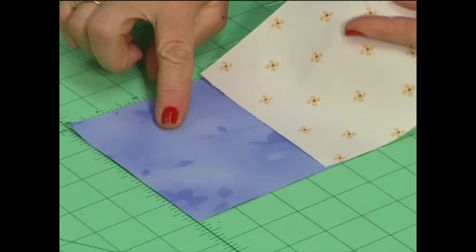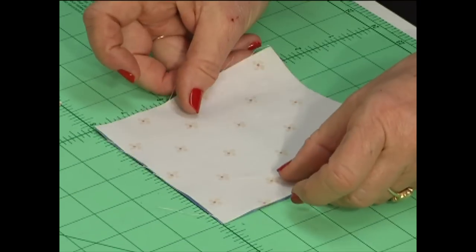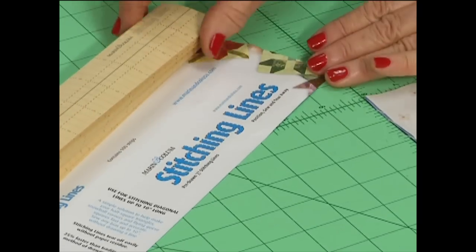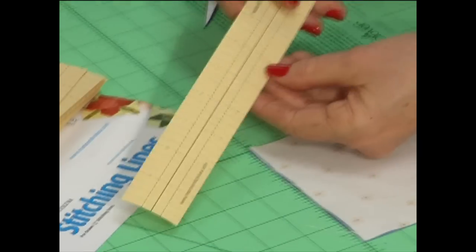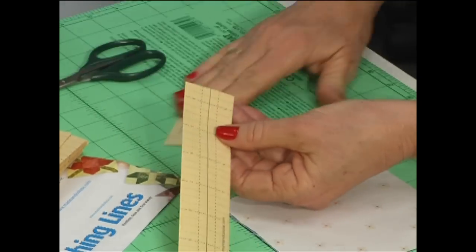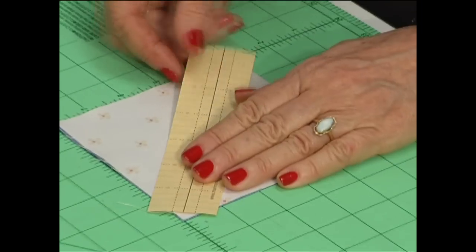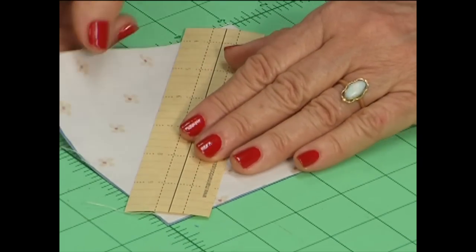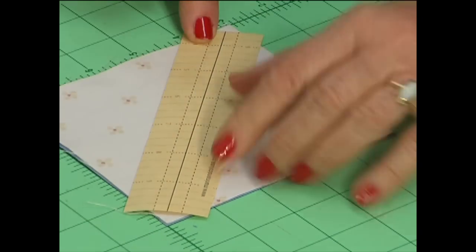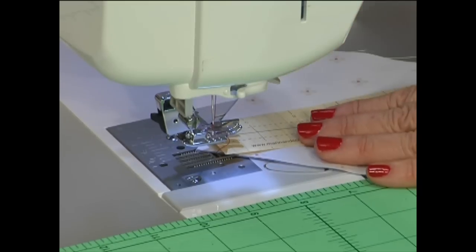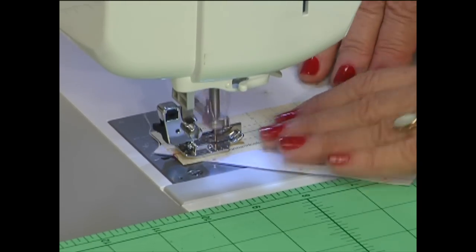Place two five inch squares right sides together and draw two diagonal lines. Now if you hate to draw lines, use your stitching lines. Cut the piece of paper to size, line up the center line with the corners of your squares, and then sew on the lines drawn one-fourth inch away.